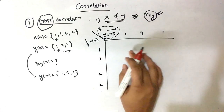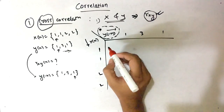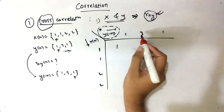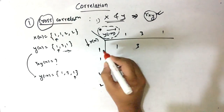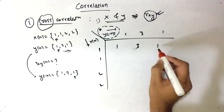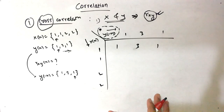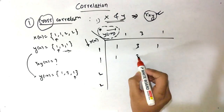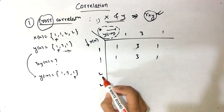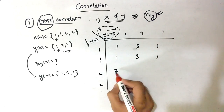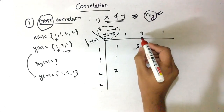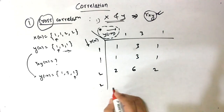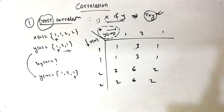Now we have to fill in the products inside this grid. 1 into 1 is 1, 1 into 3 is 3, 1 into 1 is 1. Likewise we do for the rest: again 1, so same values 1, 3, 1. Now we have 2, so 2 into 1 is 2, 2 into 3 is 6, 2 into 1 is 2. Again we have 2, so same products.